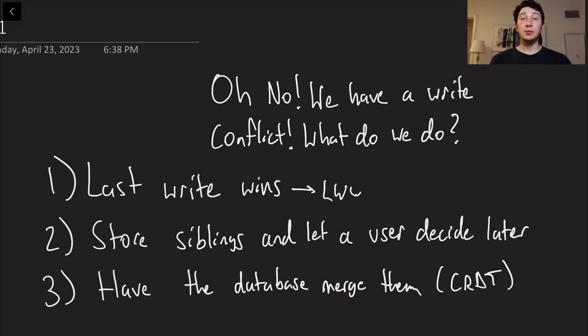Additionally, a second option is we can detect concurrent writes via something like a version vector, which allows us to see when two writes knew about one another or did not. And then we can go ahead and store both writes in the database known as storing siblings. We can eventually then have the user merge them down the line.